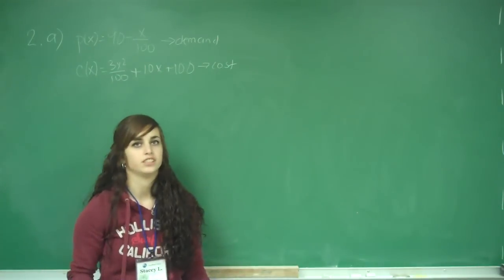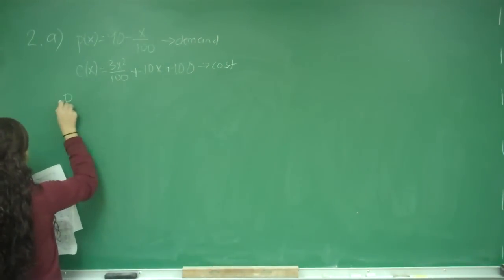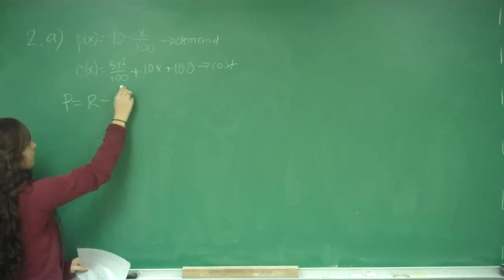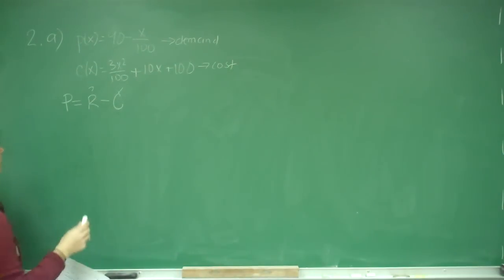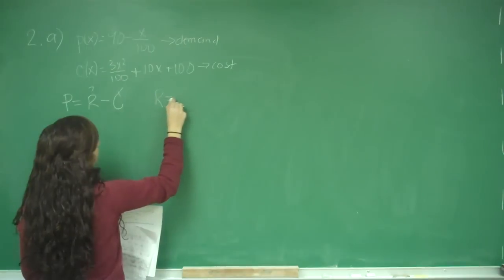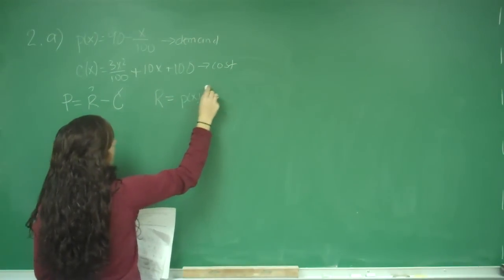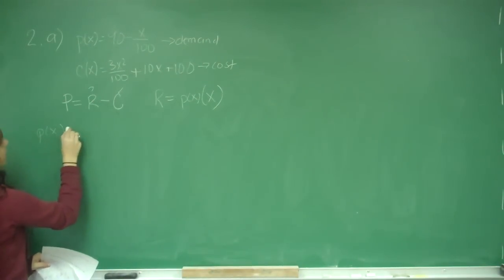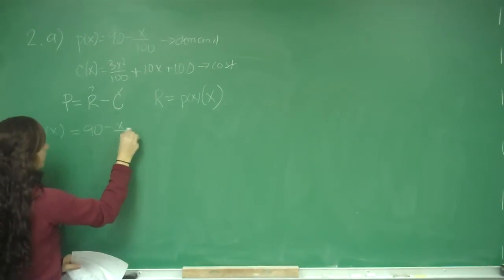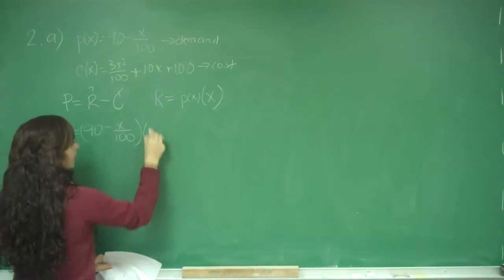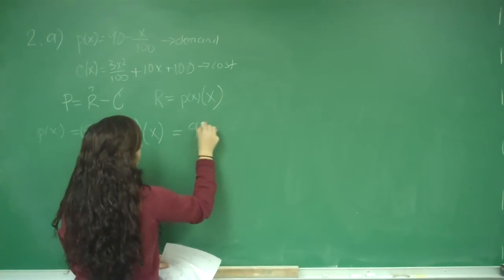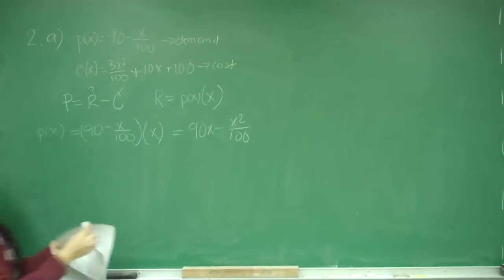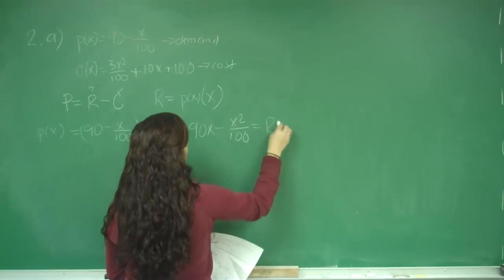They want us to find the profit function. Profit equals revenue minus cost. We have a cost function, so we just need a revenue function. Our revenue function equals our demand function times x. So we take p(x) and multiply by x: 90 - x/100, the whole thing multiplied by x, giving us 90x - x²/100. That is our revenue function.